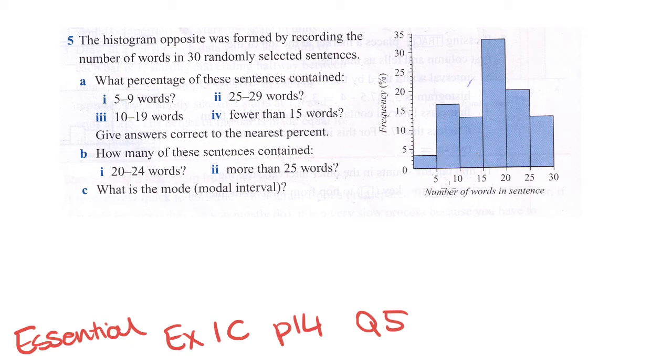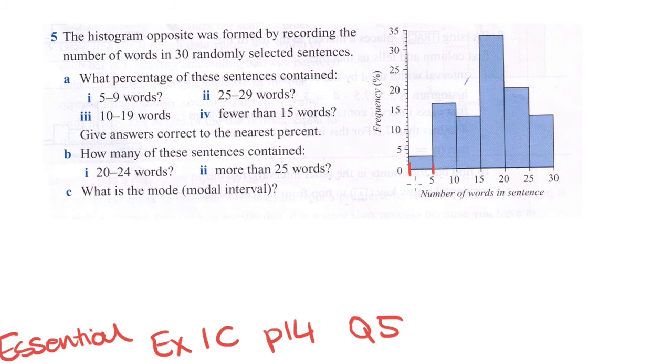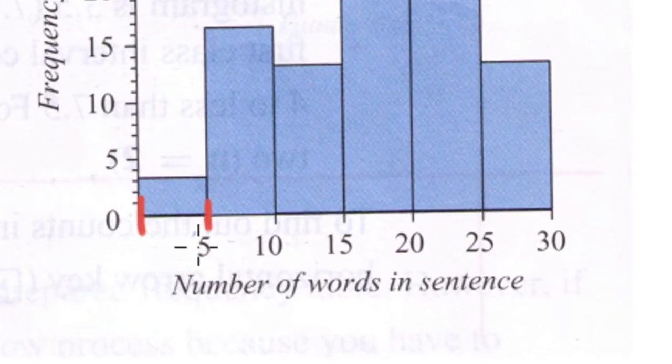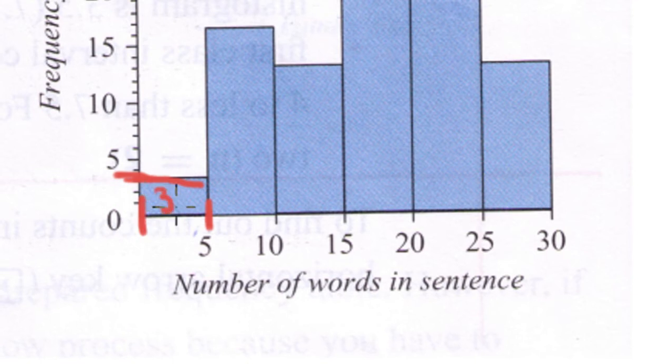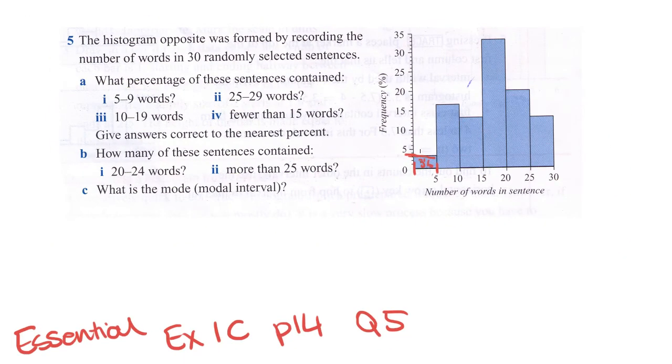We've got these intervals here being the number of words in a sentence and up here is the percentage frequency. For example, between here and here, anything with 0 words, 1 word, 2 words, 3 words or 4 words in the sentence all occurred this percentage of times, which if you read off looks like about 3% of the time.